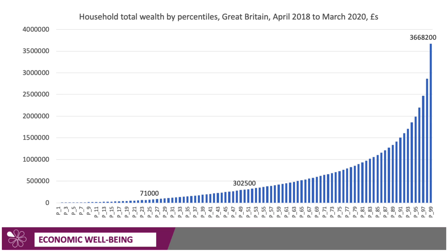That chart shows income; this chart shows wealth. It shows household wealth in the UK by percentiles, splitting the population up into 100 percentiles. The data is from 2018 through to the spring of 2020 — the start of the pandemic. The chart shows the extremities of wealth inequality in the UK: people at the 25th percentile have an average wealth of just over £70,000; people at the 50th percentile have an average wealth of just over £300,000, much of which is built into property. Whereas people at the 99th or 100th percentile have wealth in excess of £3.6 million — in property, savings, stocks and shares, and other marketable assets.